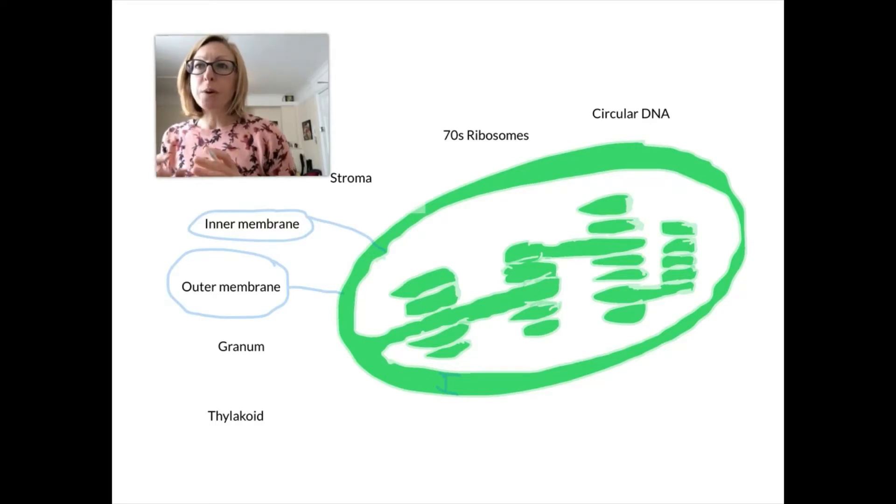So what's the point of the membranes? Both of these membranes are made out of a phospholipid bilayer with proteins embedded in them. They act as a barrier to allow particular substances in and out of the organelle, so it can control what's moving in and out of it.